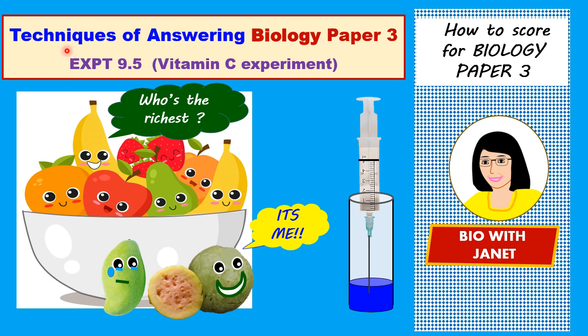Greetings to everyone. Welcome back again to my channel. Today we'll continue to discuss techniques of answering biology paper 3. This time we'll look at another experiment, which is experiment 9.5 in your textbook on vitamin C — determining the concentration of vitamin C in different fruit juices. We're going to discuss a question based on this experiment and the techniques of answering it, in order for you to score high marks for your biology paper 3.